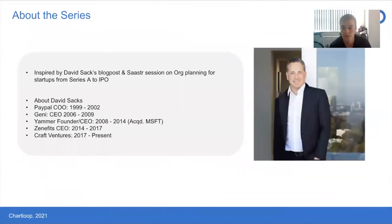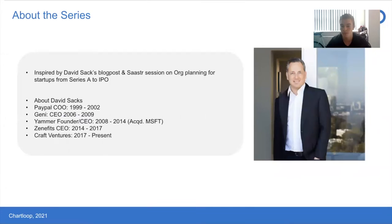The SaaS org chart concept starts with David Sachs, who's a notable entrepreneur. His early days were when he was the COO of PayPal. He's notable for building Yammer and selling it to Microsoft. Currently he's a venture capitalist at Craft Ventures. He's a thought leader in SaaS sales teams and org planning. He had a blog post published this summer about planning your org chart, which ballooned into a full-fledged talk at SaaStr, where he explains exactly how to plan and hire at every stage of your series.